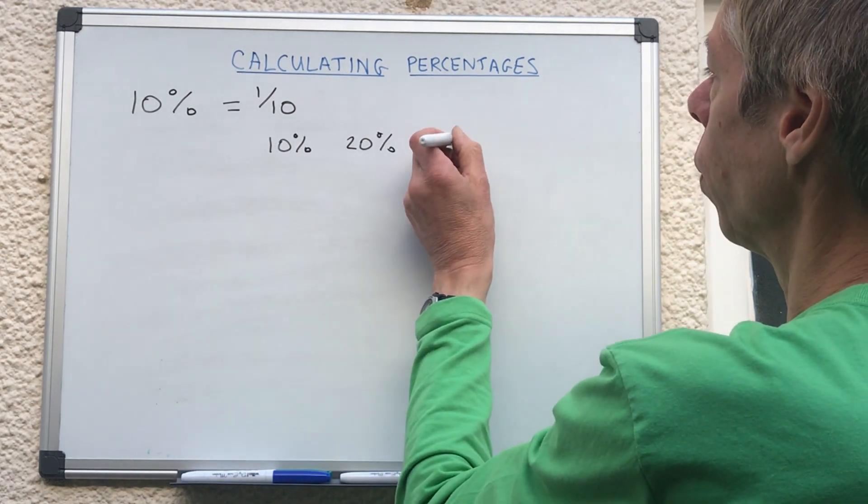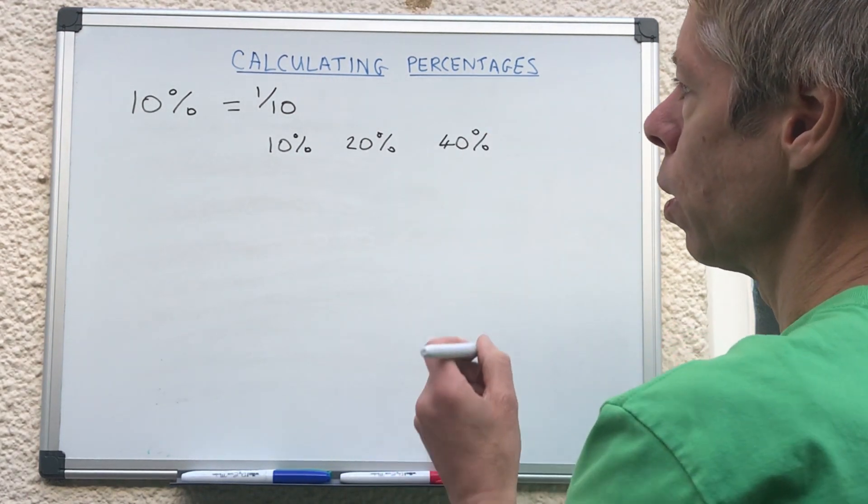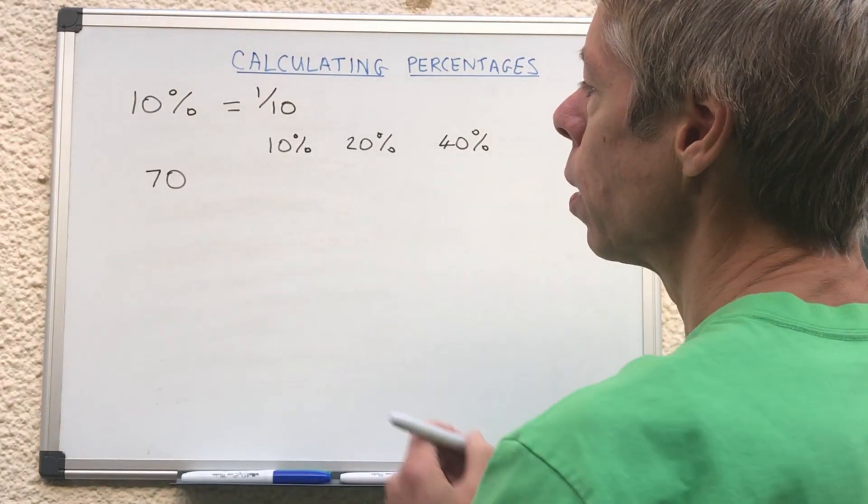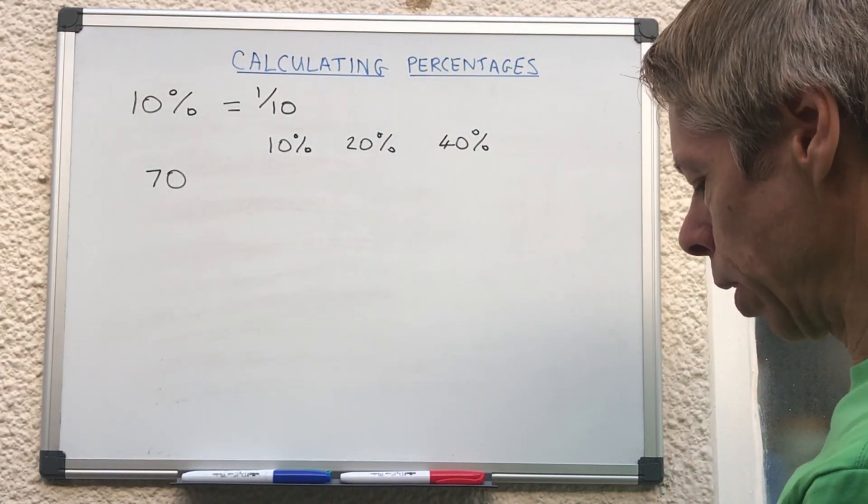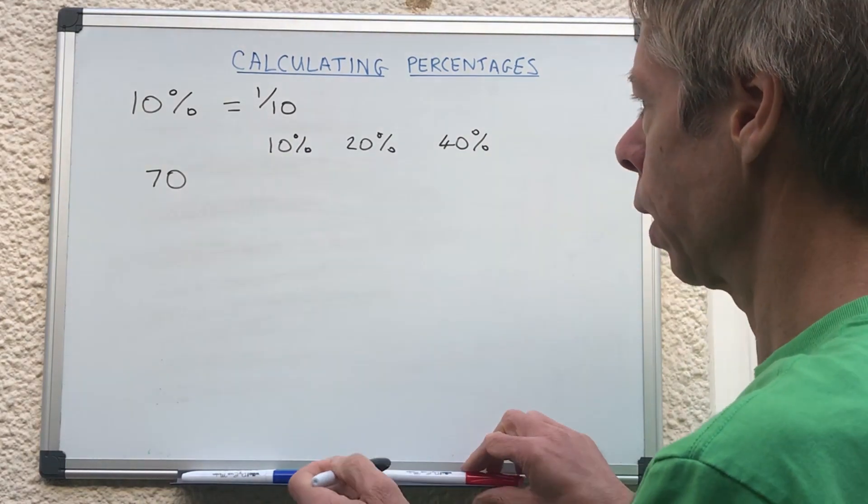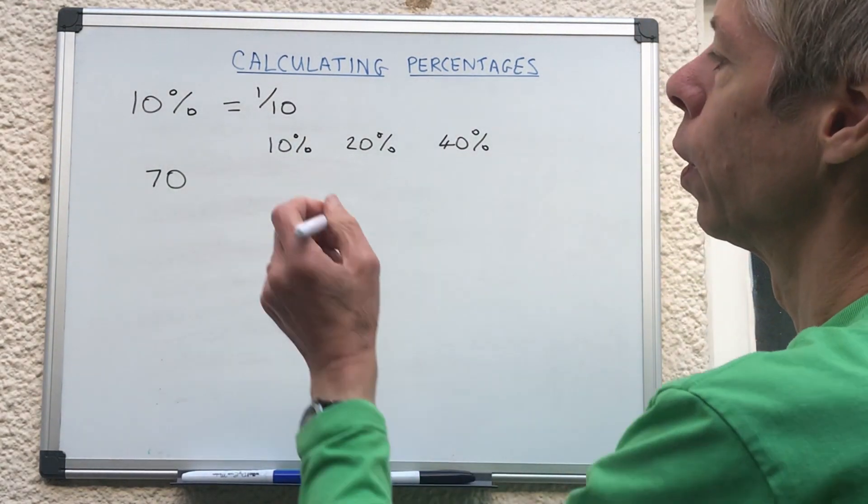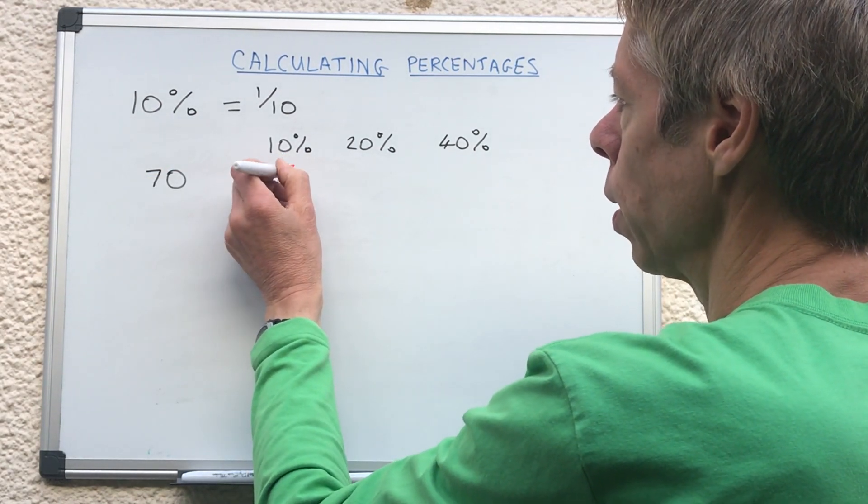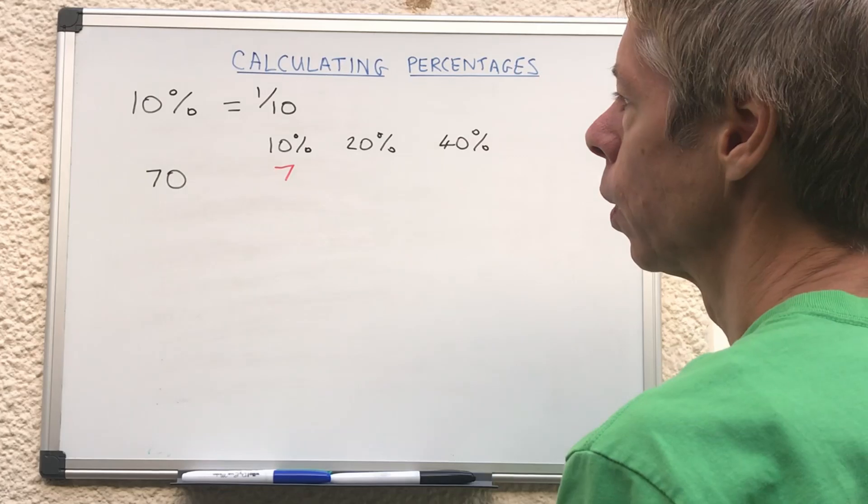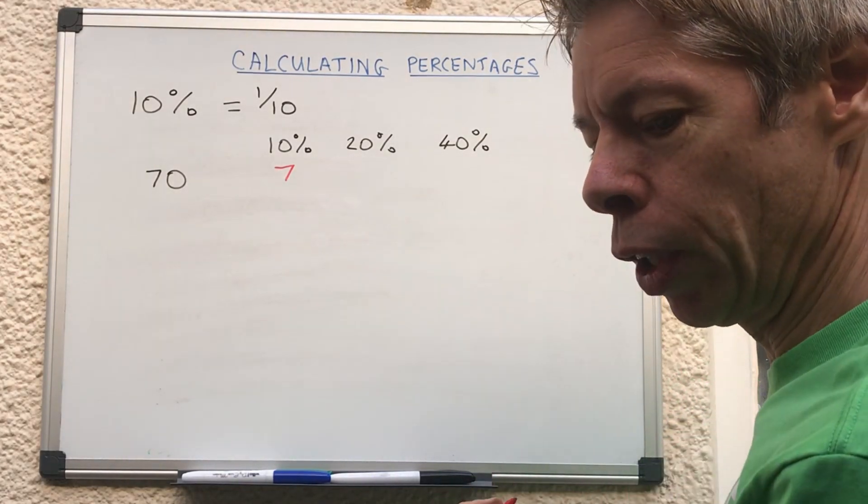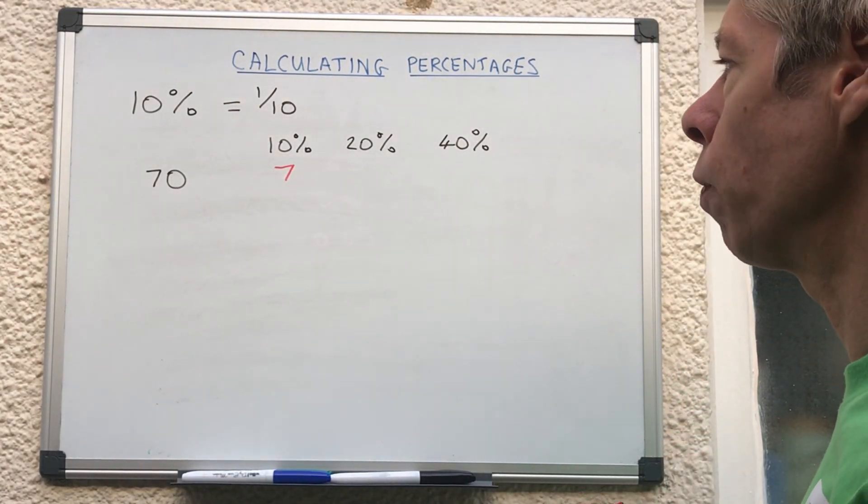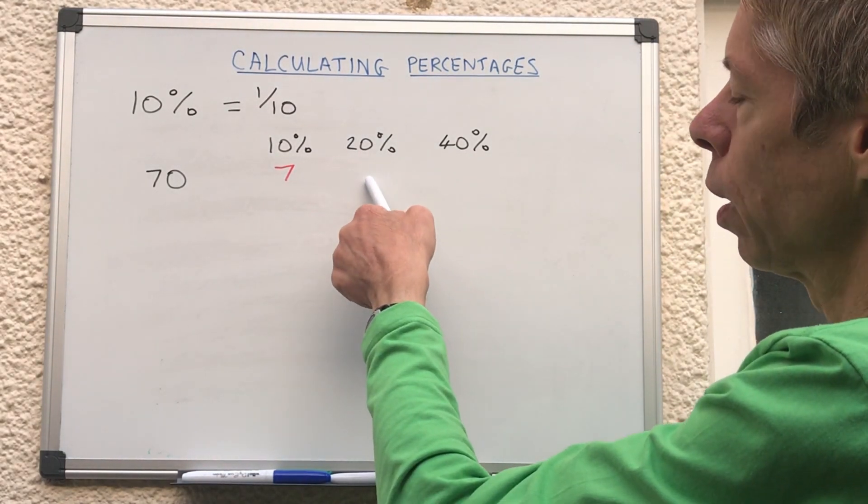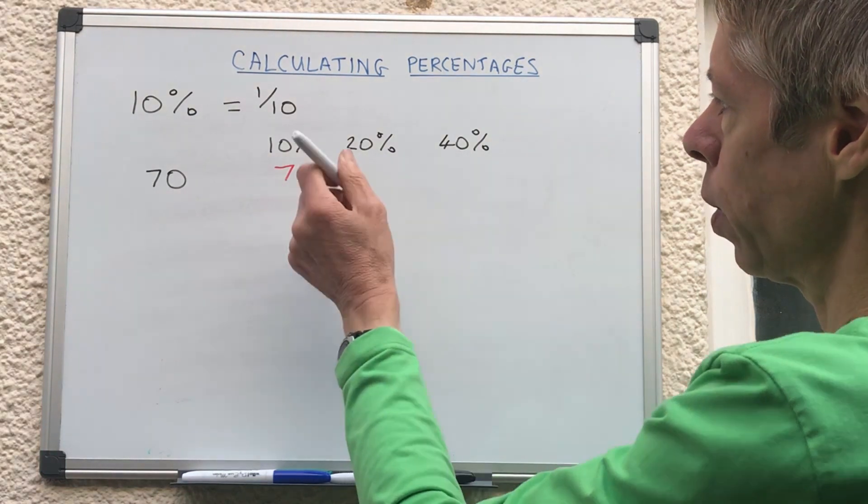So let's take the number 70. If we want to work out ten percent of 70, remember what we do, we divide by ten, so we can literally take off that zero so the answer would be seven. You can use ten percent as a basis of a lot of your percentage calculations. So if you wanted to know twenty percent, twenty is double ten, so we double that seven to give us fourteen.